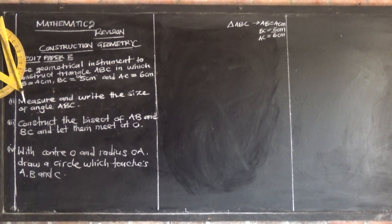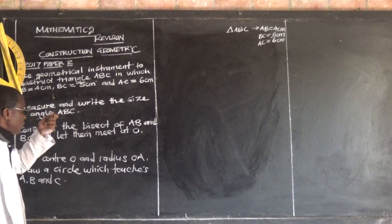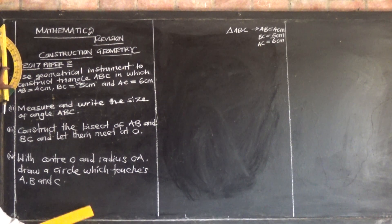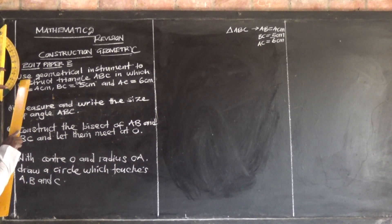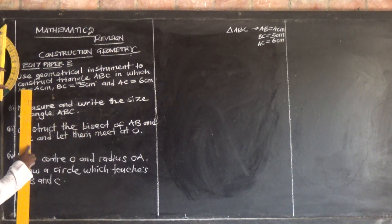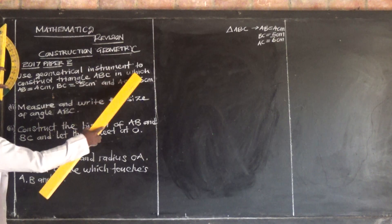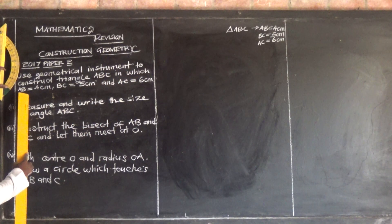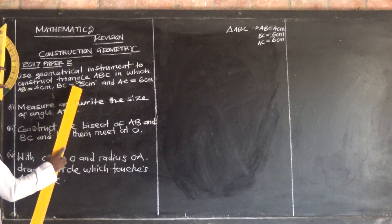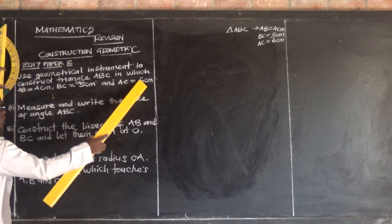Let's look at 2017 Paper 2, a question on construction geometry. The question says: use geometrical instruments to construct triangle ABC, in which AB is equal to 4 centimeters, BC is equal to 5 centimeters, and AC is equal to 6 centimeters.